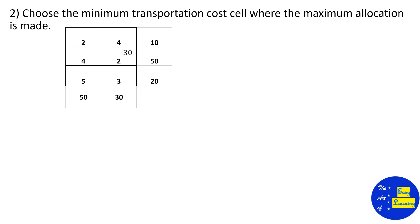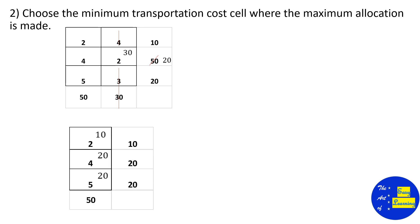We allocate the value 30 to cell (2,2), so the second column will be cancelled as it is balanced. In the second row, 50 minus 30 gives a remaining quantity of 20. Reduce the table. In the third step only one column is left, with cost values 2, 4, and 5.